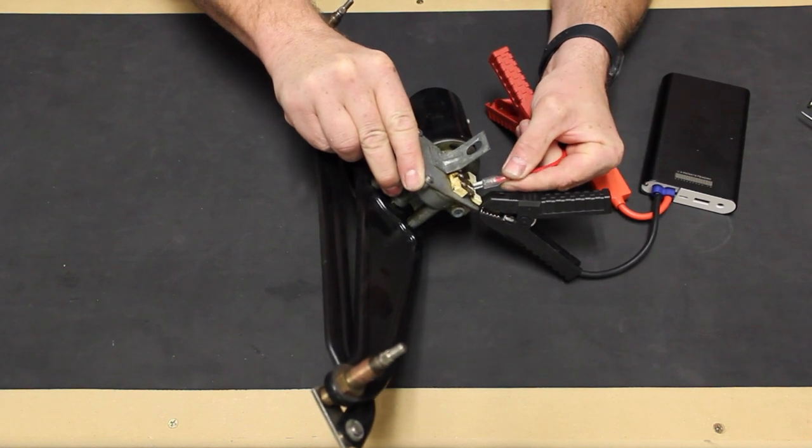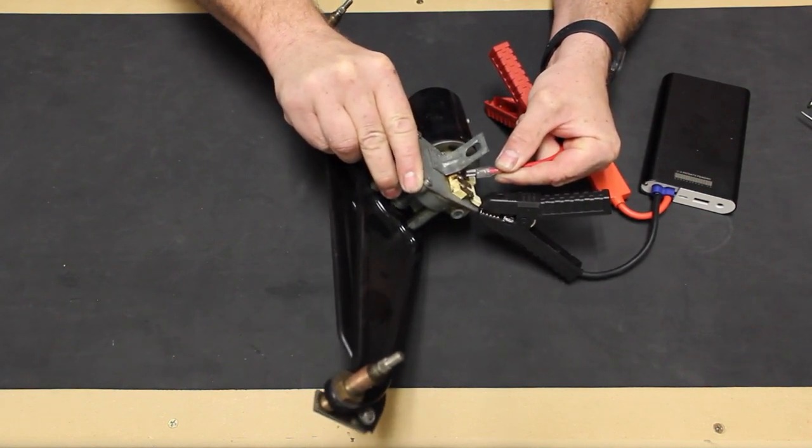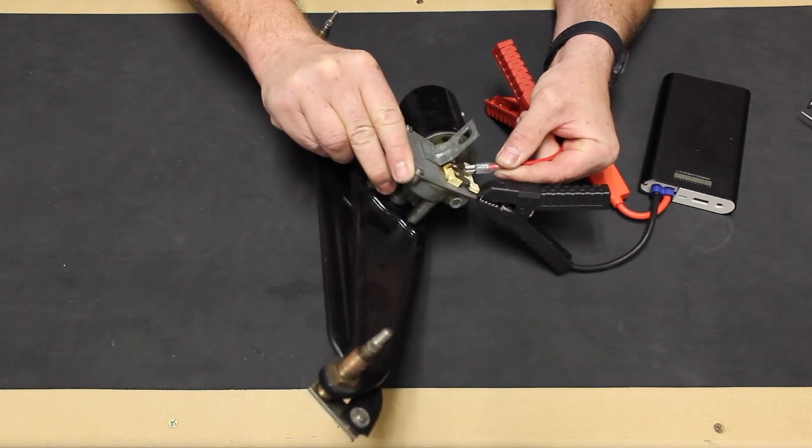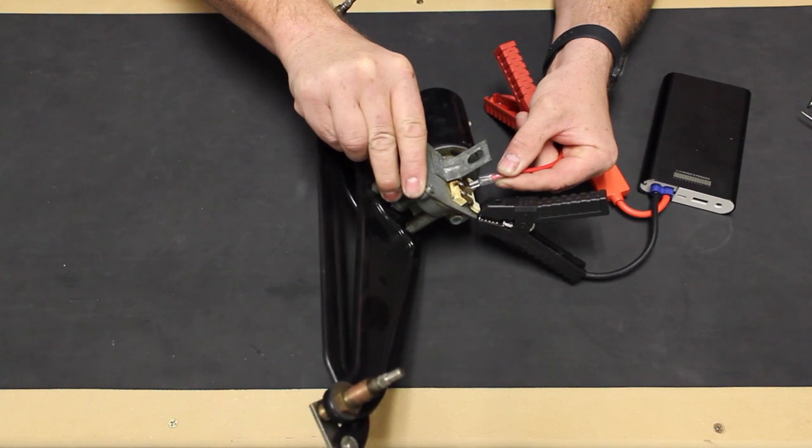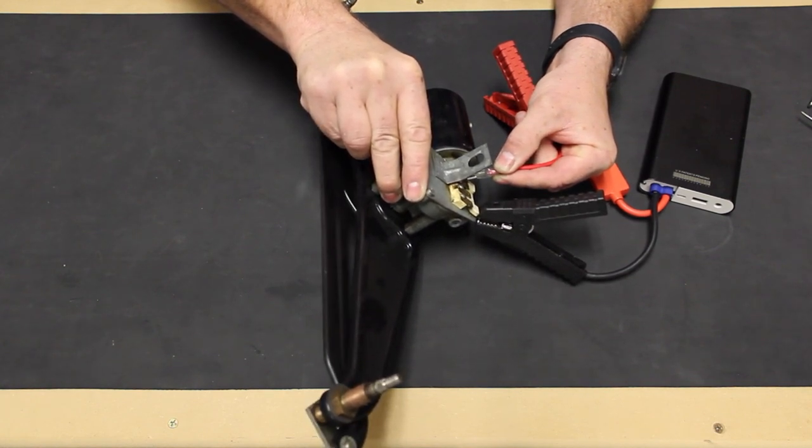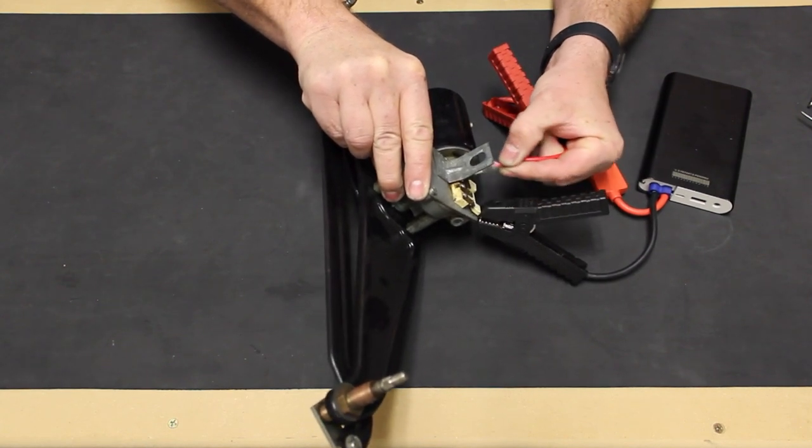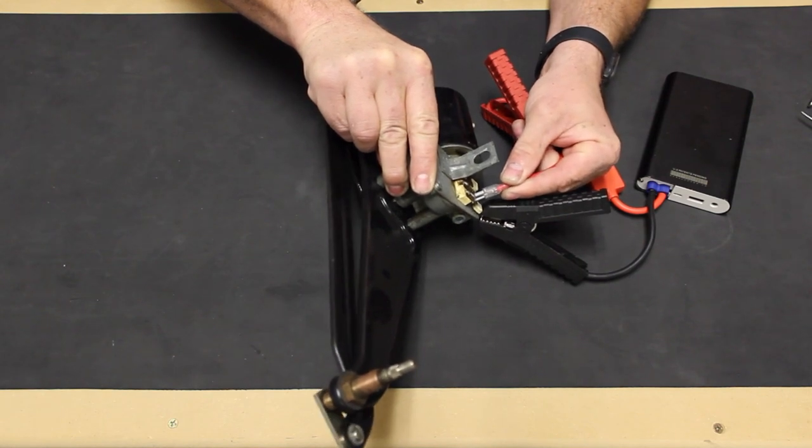Using a 12 volt jumper box, we'll ground out the 31 terminal and then using a jumper wire, we can touch the 53 speed 1 terminal to operate the motor. Then we can test the speed 2, 53B terminal and the motor operates a little quicker than speed 1. Then we test the 53A terminal and the motor parks, although we are almost at the parked position already.